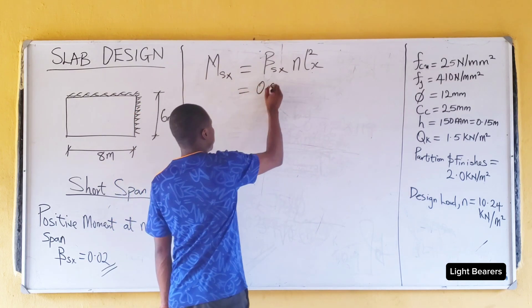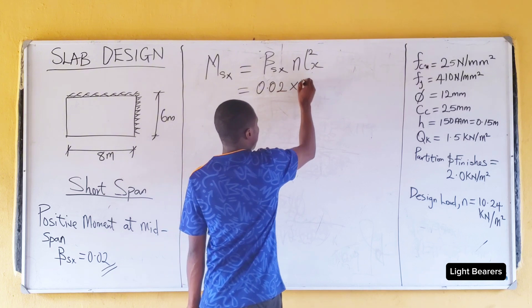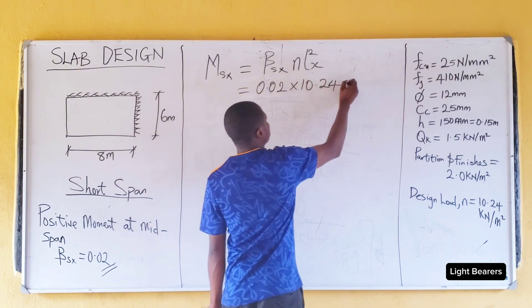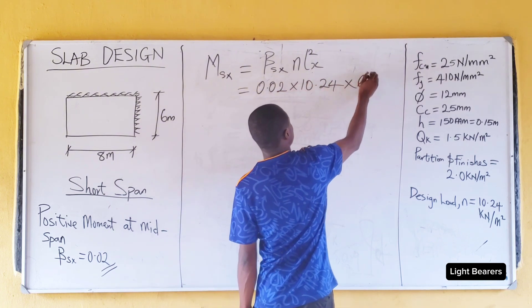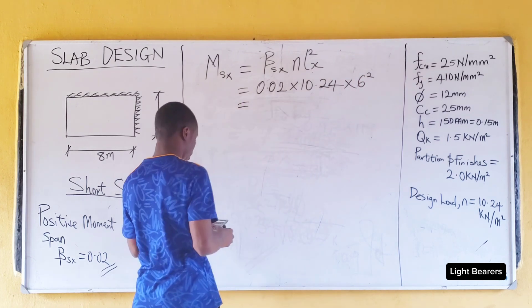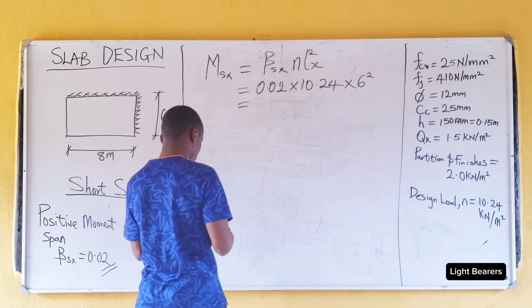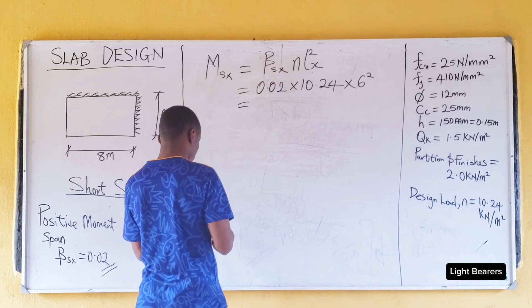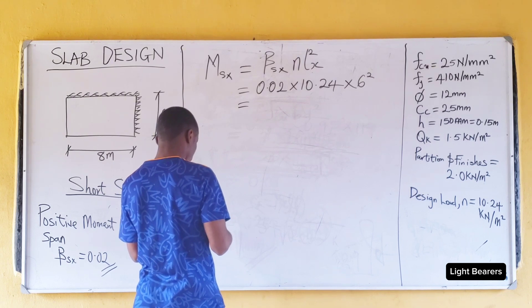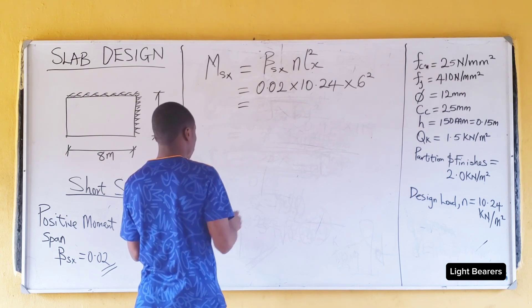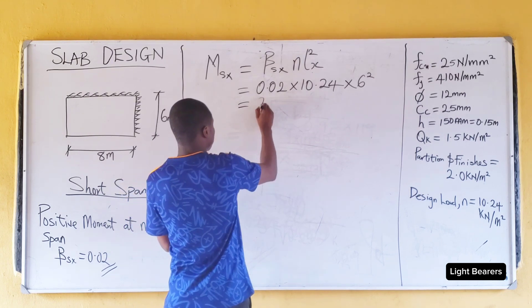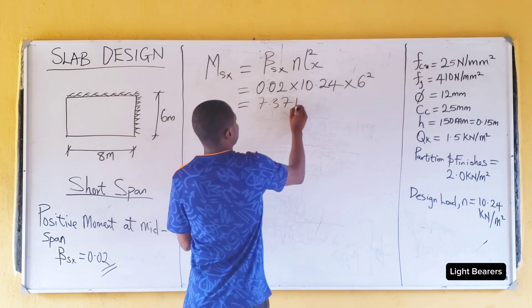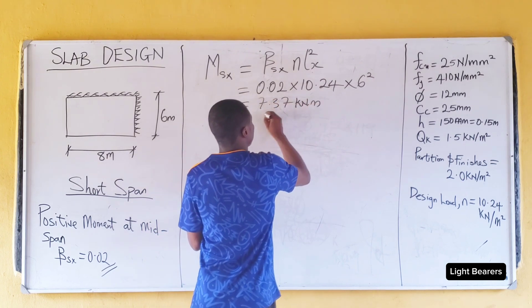We have 0.02 multiplied by 10.24 multiplied by lx squared, which gives us 7.37 kilonewton meter.